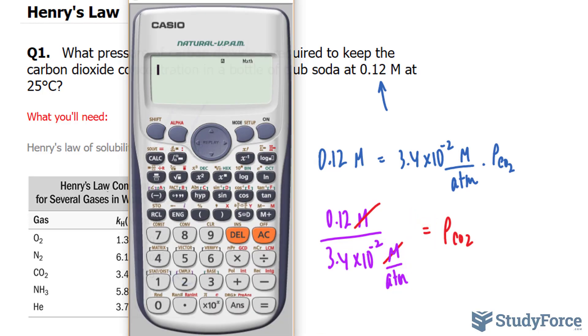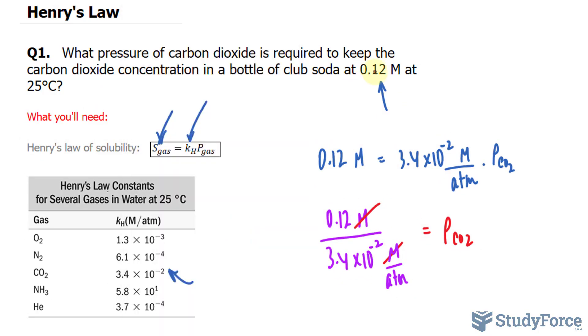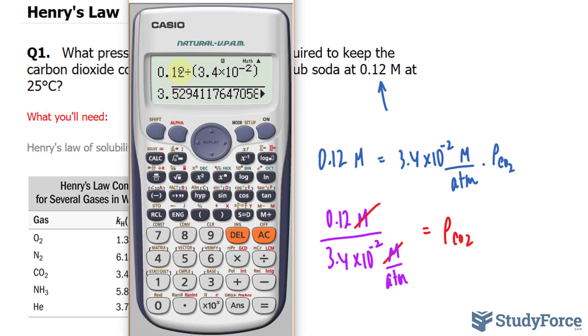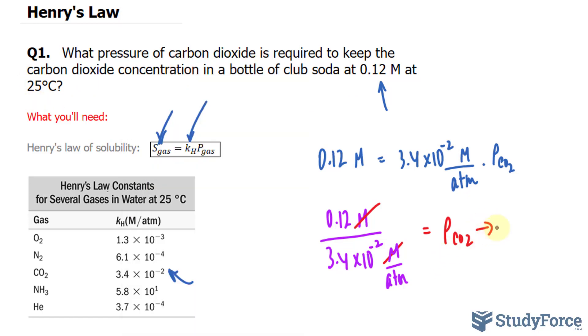So let's use our calculator. 0.12 divided by 3.4 times 10 to the power of negative 2, 3.5, and since this is two significant figures and so is that, we should stop writing after this 5. So the pressure is 3.5 atmospheres.